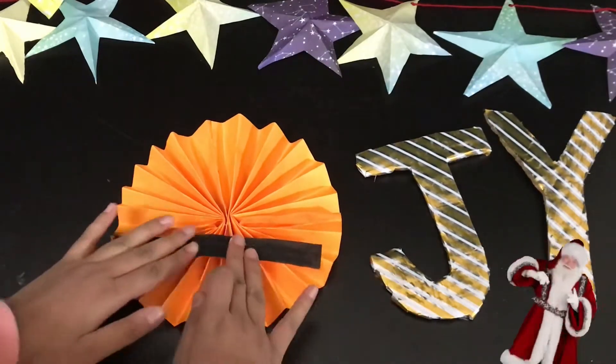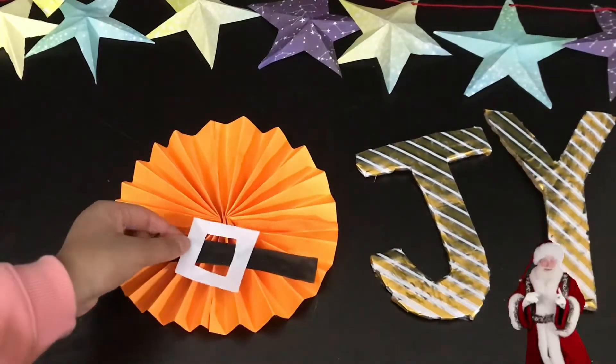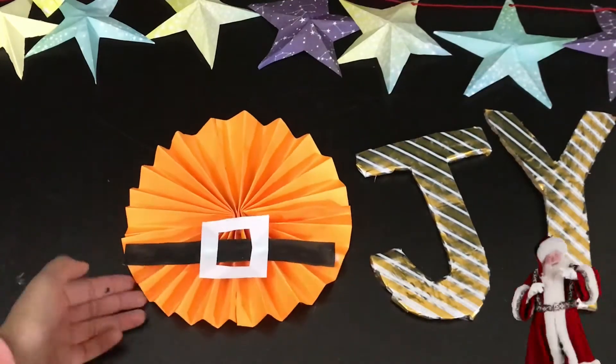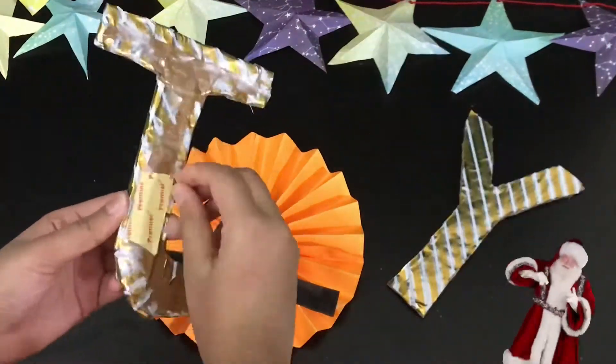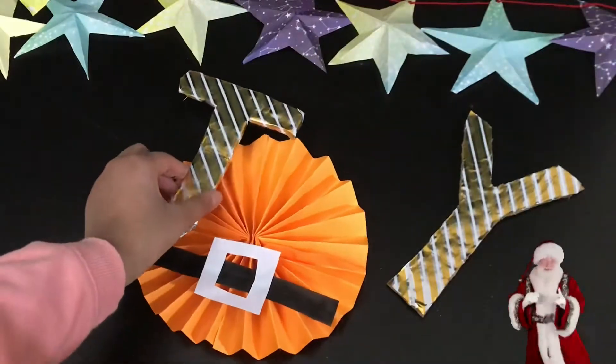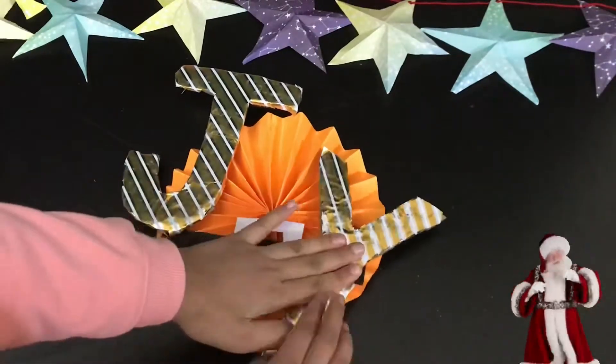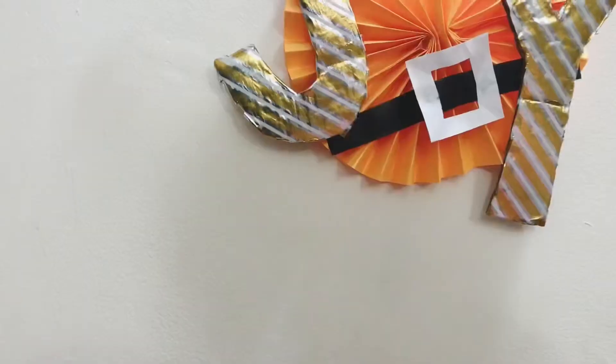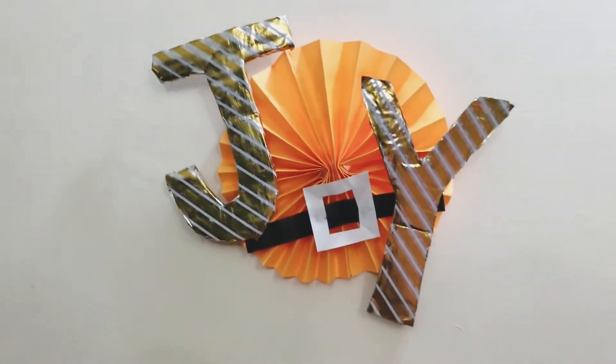For some more Christmas vibes, I'm adding a Santa's belt as well. Then paste the two letters using some double-sided tape. Use some tape to attach it to the wall and it's ready. This forms the word joy.